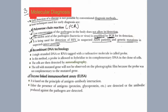Now the second important technique — recombinant DNA technology. In this method, a single-stranded DNA or RNA tagged with a radioactive molecule is used. We call it a probe. A probe is an already prepared single-stranded DNA or RNA which is radioactive.